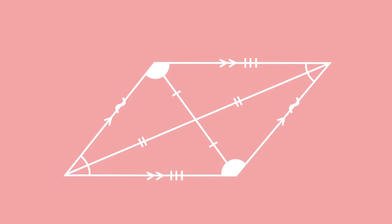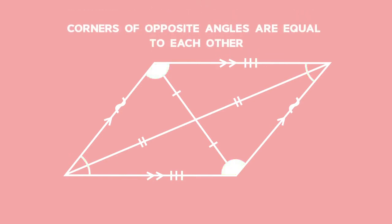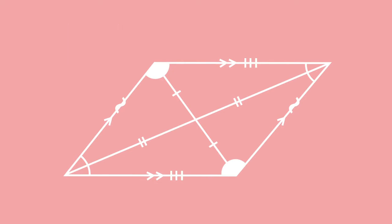The opposite angles are equal. You can see that the opposite angles are formed where the vertices meet, so at the corners the opposite angles are equal to each other. The diagonals, which are drawn from one vertex to the opposite vertex, bisect each other.